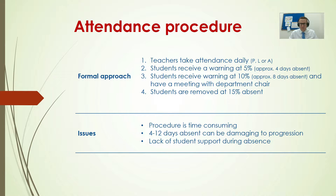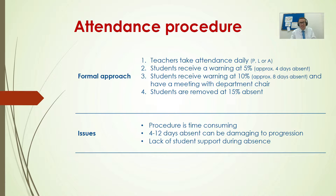Some issues we face with this procedure is that it is time consuming. Once the 10% warning is out, the time to get a meeting together with the department chair, to get the warning signed, and then for the 15% to follow up and contact the students does take time. A big problem is that the action all comes after the absence. So if they're absent for 4 to 12 days, this amount of absence can already have done the damage to their progression. They might change their behaviour, but they've missed so much that it could affect them later down in the term. And there's a lack of student support while they are actually absent — they may be having sickness or personal issues and we're not supporting them while that's happening.